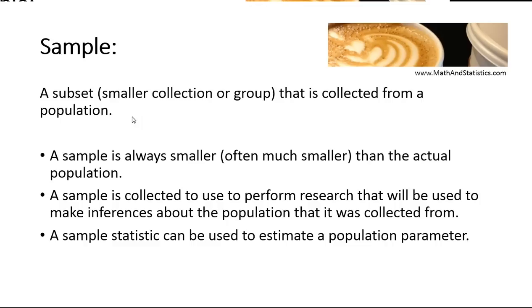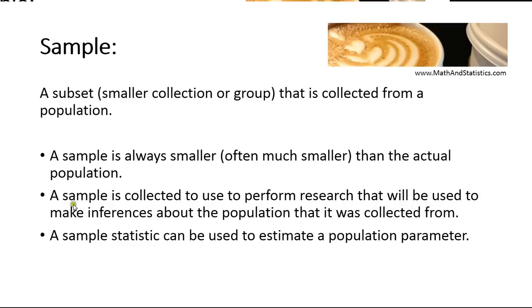A sample, on the other hand, is a collection gathered from a given population. A sample is always smaller — often very much smaller — than the actual population it's collected from. Samples are generally collected from populations so that research can be performed on that population without having to do research on every single member. You can imagine that if your research affected all humans, that's over 7 billion people. There's really no way to do research on 7 billion people, but there is a way to take a sample, do your research on that sample, and then make an inference about how the results might affect the population.